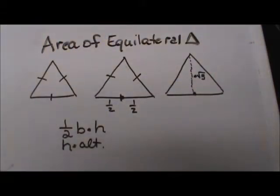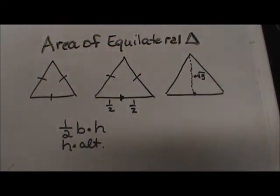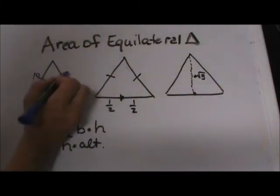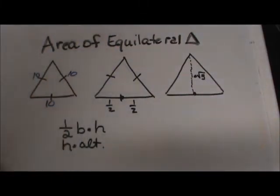First, we need to know what an equilateral triangle is. It is a triangle with three equal sides. We are going to give each side the value of 10. If we know this side is 10, this side is 10, and this side is 10.